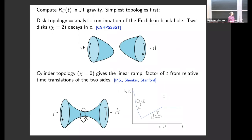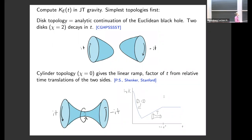More interesting is what we get at the next order in the topological expansion: a cylindrical topology, which gives the ramp in the spectral form factor. The action from the left and right sides on this cylinder cancel — there's a +it and −it, a relative sign — so you're left with an integral over the zero mode of the geometry corresponding to rotating one side with respect to the other. This zero mode has a volume proportional to t, so you get a contribution that grows linearly in time.